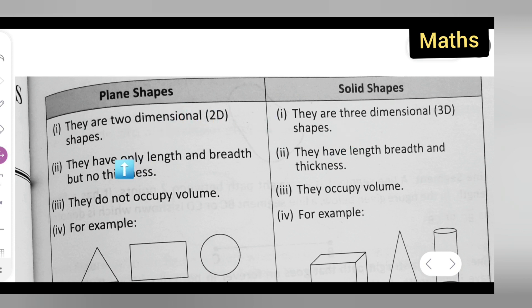Second point under plane shape is, they have only length and breadth but no thickness. Whereas, second point under solid shape is, they have length, breadth and thickness also.